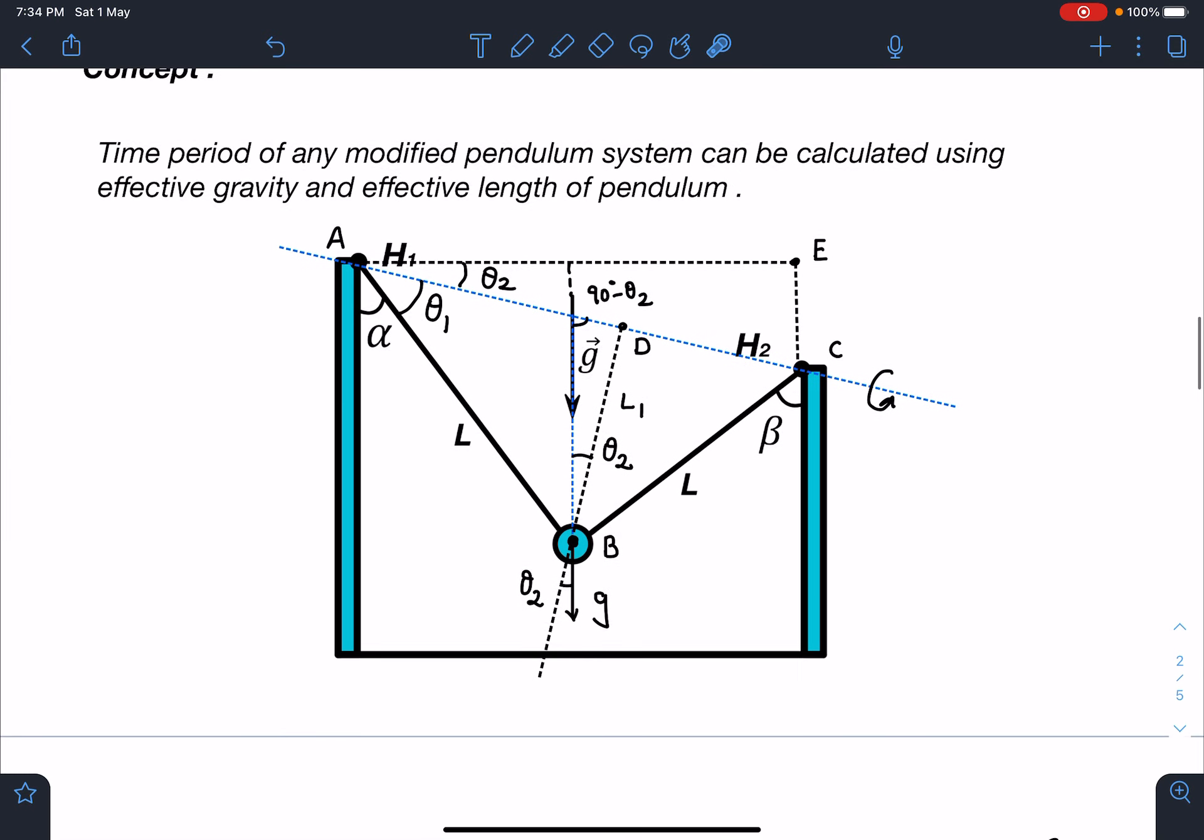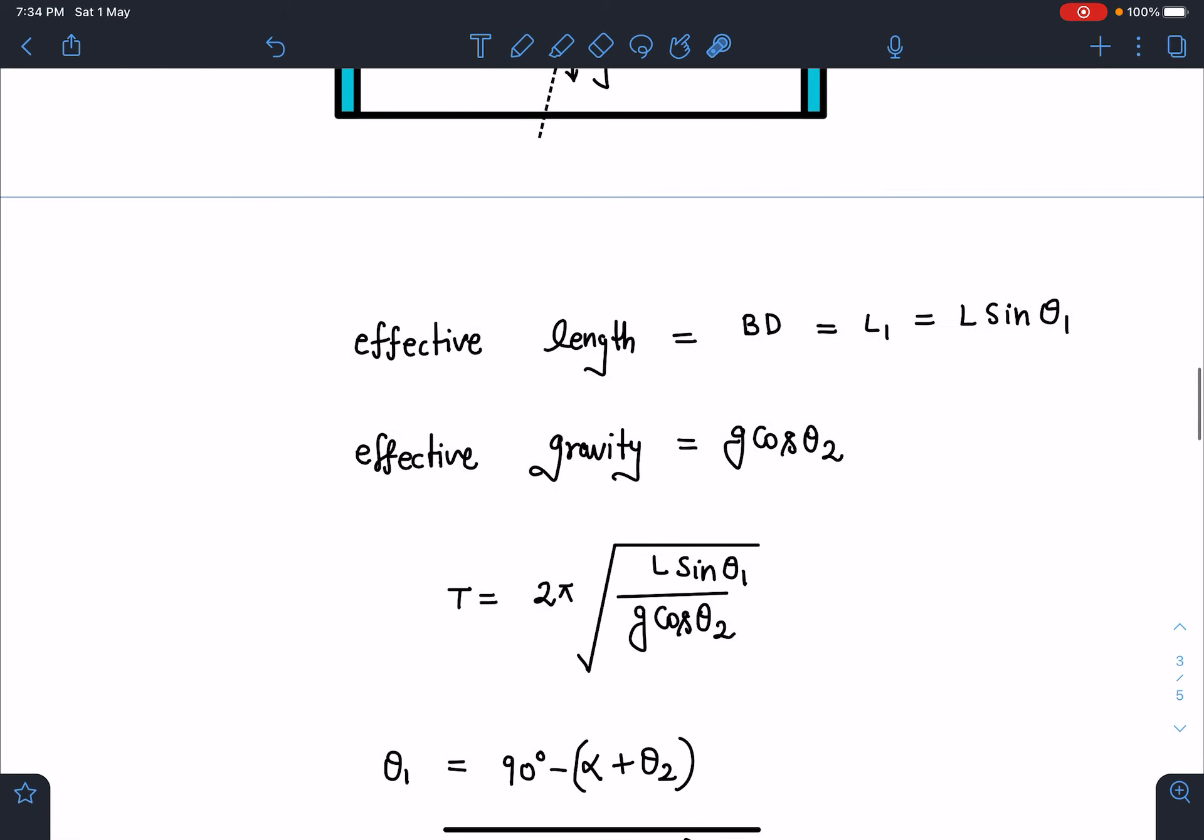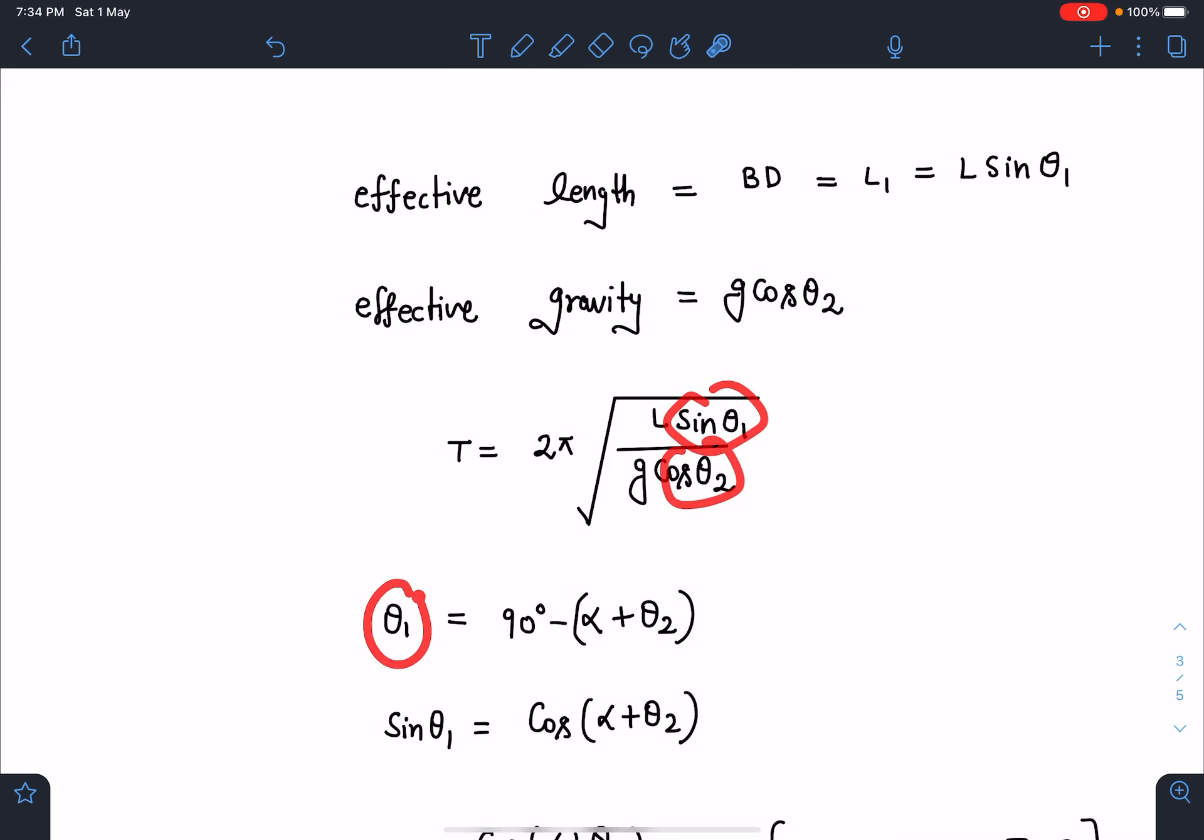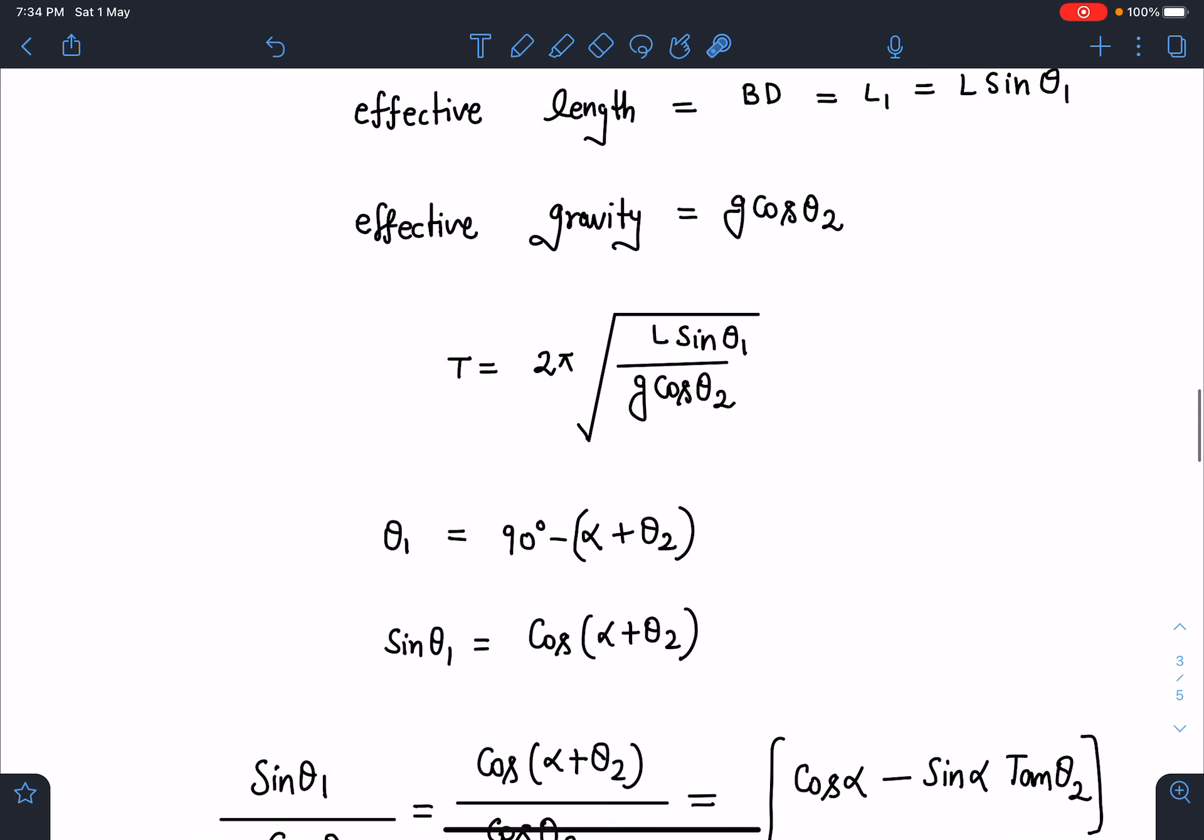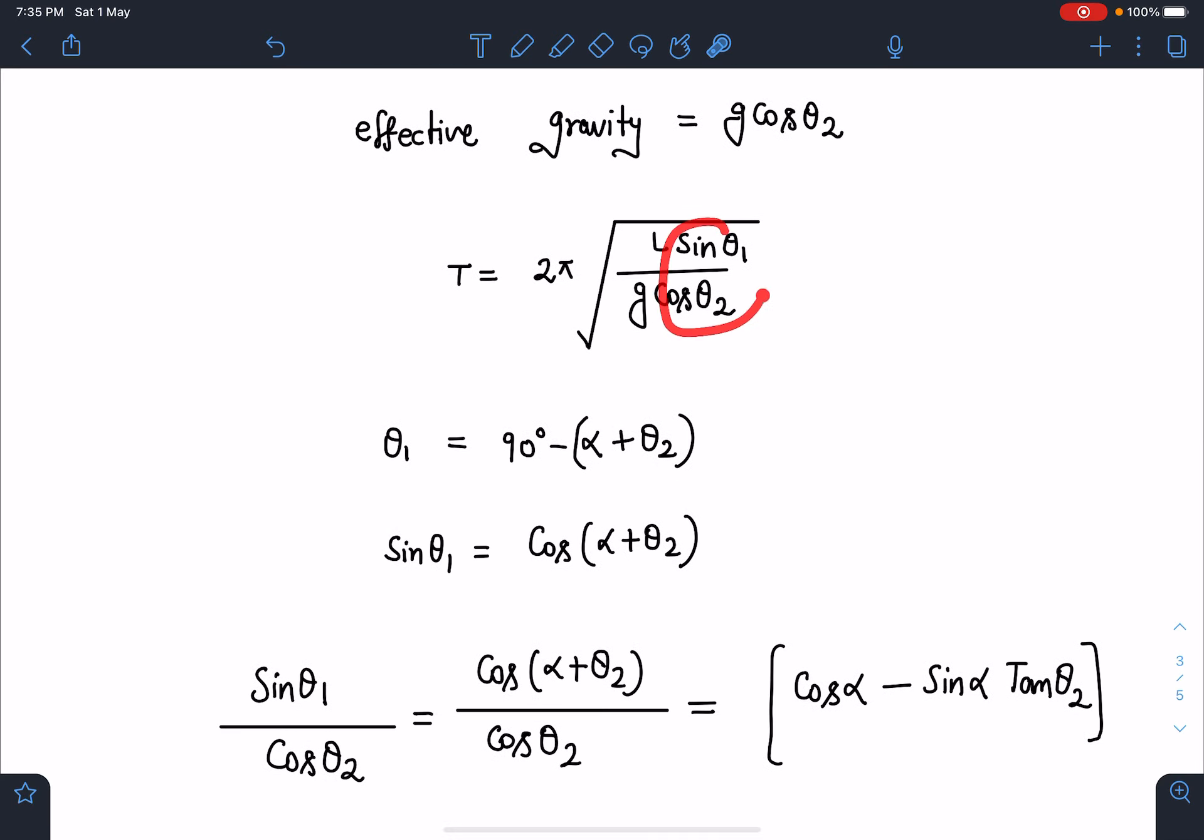And here if you see carefully this part, sum of these three angles alpha, theta1 and theta2 is 90 degrees. So theta1 and theta2 we have to calculate here, sin theta1 and cos theta2. So I can write theta1 as 90 minus alpha plus theta2 here. So sin theta1 I can write as cos of alpha plus theta2. And let us evaluate this ratio which is sin theta1 by cos theta2.